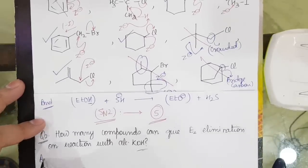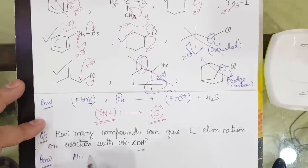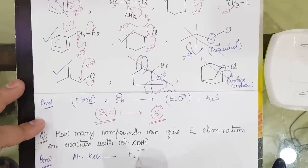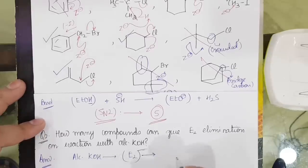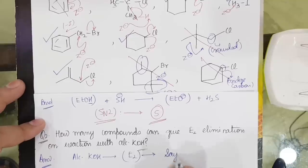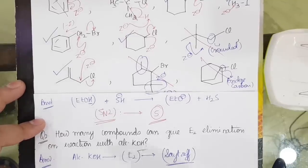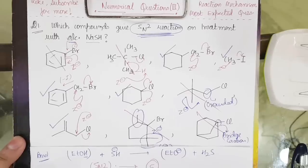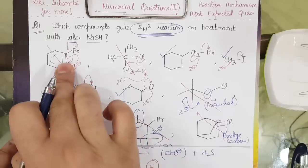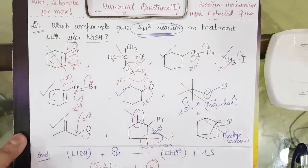The next question: how many compounds can give E2 elimination with alcoholic KOH? Alcoholic KOH does E2 elimination because it is a strong base and the final product is the very stable Zaitsev product. So let us see in which compounds elimination can occur.